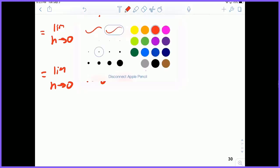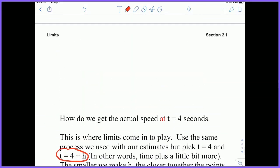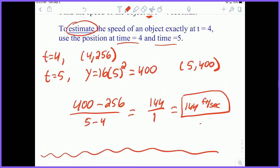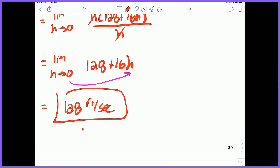And now I can use direct substitution. Plug that right in and get the answer of 128 feet per second. So our estimate was not too far off. Our estimate using 4 and 5 was 144. But the actual speed exactly at 4 seconds is 128. So limits help us make that second value instantaneously just kind of disappear that little end piece. So that's the speed exactly at 4, the instantaneous rate of change.